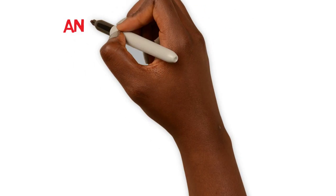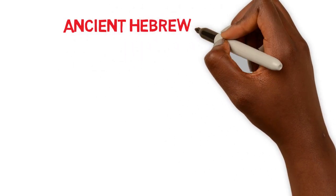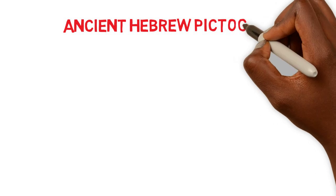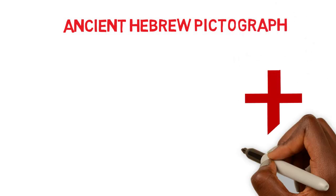Tau in the ancient Hebrew pictograph looks like this symbol here. What does it look like to you? That's right — it is a picture of two crossed sticks.